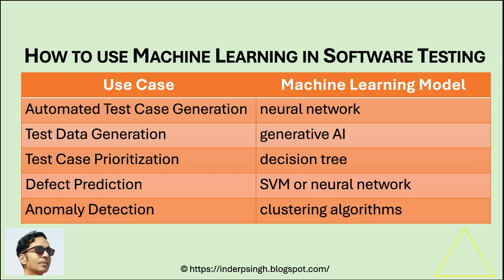Now let's see how to use machine learning in software testing. For automated test case generation, a neural network might input a user's story, use generative AI for software testing and produce test cases that cover all possible scenarios, including edge cases. For test data generation, generative AI can automatically create data that mimics real-world usage, which is especially useful for agile testing.